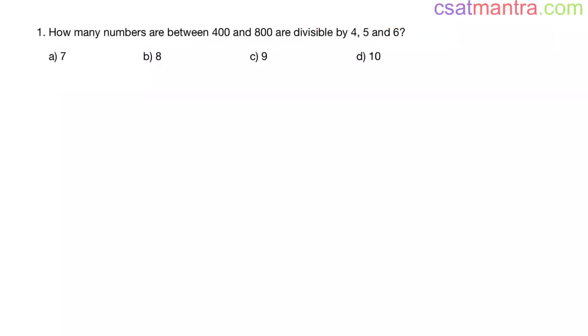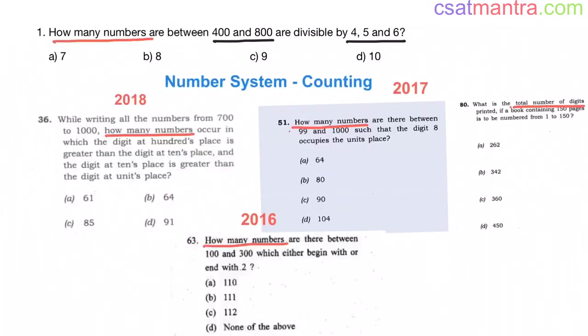How many numbers are between 400 and 800 that are divisible by 4, 5, and 6? This is a question based on counting from the number system chapter.